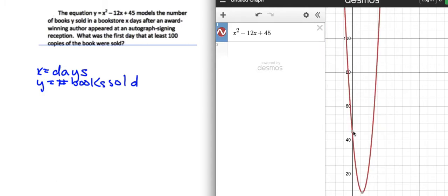And I kind of feel like this equation is kind of weird, because after the award-winning author came, the sales actually went down right after they came. So, this was at day zero, and so after they came, you can kind of like go down, after one day, so that it went down, and then I guess maybe they got more famous? So, basically what it says, what's the first day that at least a hundred copies of the book were sold?